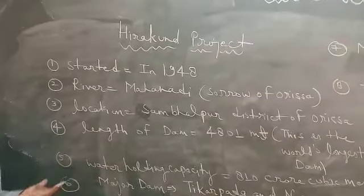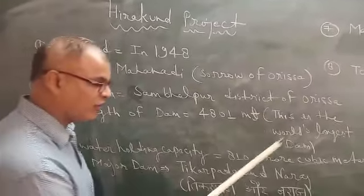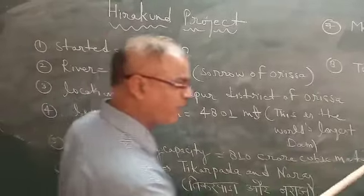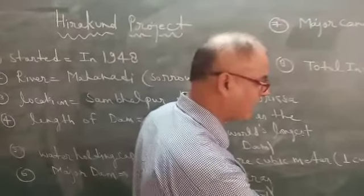Water holding capacity of this dam is 8.8 crore cubic meters. One cubic meter equals 1000 liters.